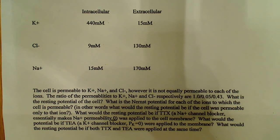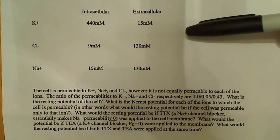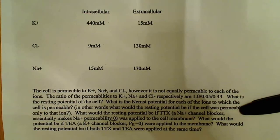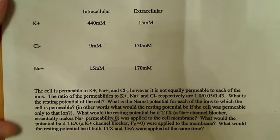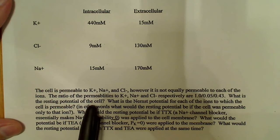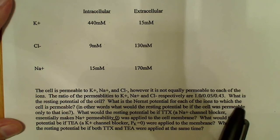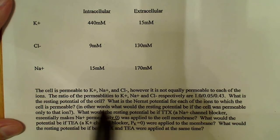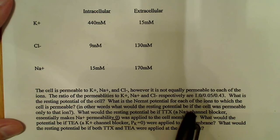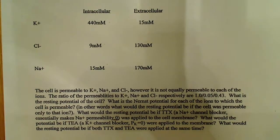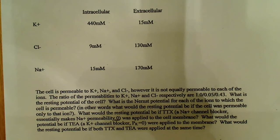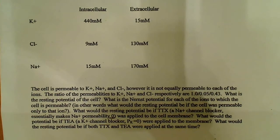I did a video previously about the Goldman-Hodgkin-Katz equation using this data set here. There are several other questions in this very long question that we can do, so I figured we'd look at those now. We did the resting membrane potential for this cell last time. Now, this asks: what is the Nernst potential for each of the ions to which this cell is permeable? In other words, what would the resting potential be if the cell was permeable to only that ion? So, what is the equilibrium potential or Nernst potential for each of the above ions?